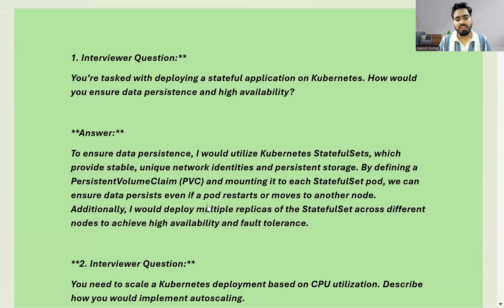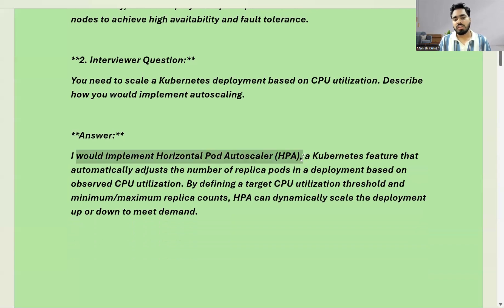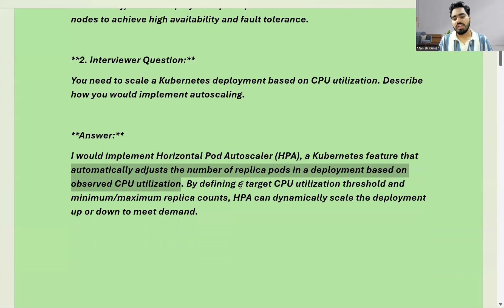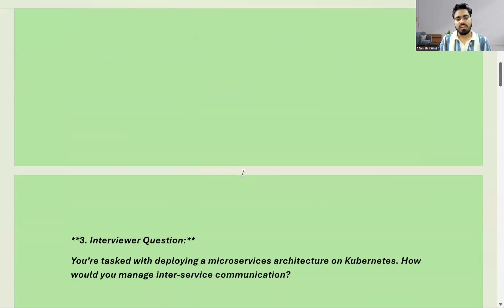The second question: you need to scale a Kubernetes deployment based on CPU utilization. The requirement is that your deployment should scale up or scale down based on CPU — for example, when CPU utilization goes above 70% the number of pods should increase, and when it drops below 40% it should scale down. To do that, you can implement HPA — Horizontal Pod Autoscaler — which automatically adjusts the number of replica pods in a deployment based on CPU utilization. You define a target CPU utilization threshold and minimum/maximum replica count, and HPA will dynamically scale the deployment up or down based on demand.